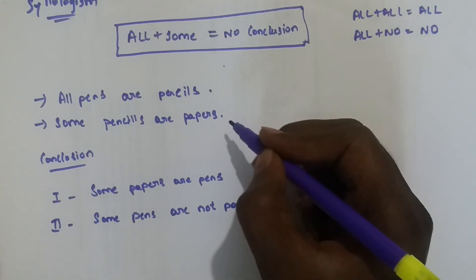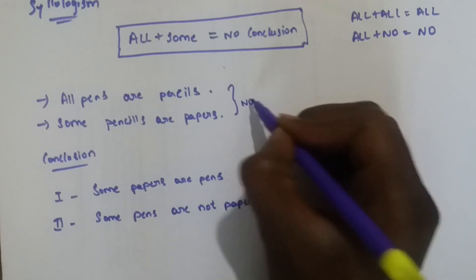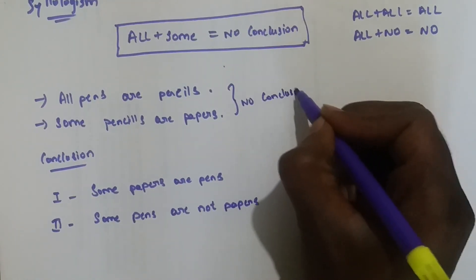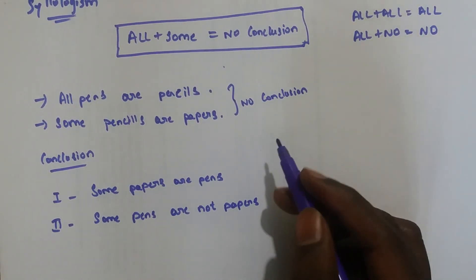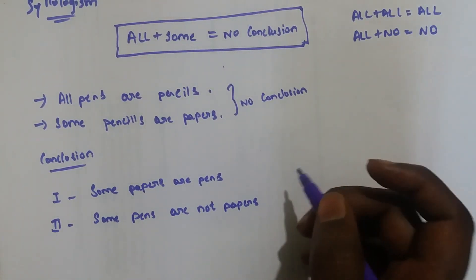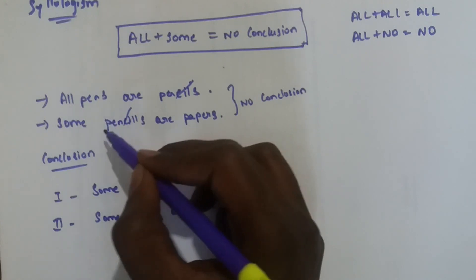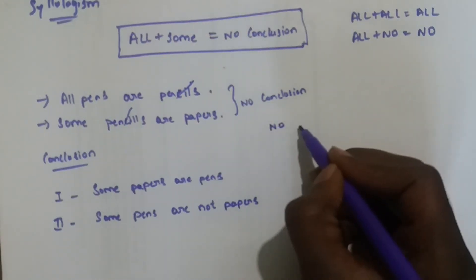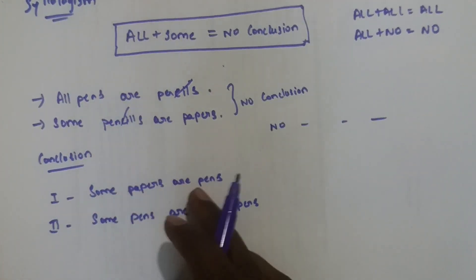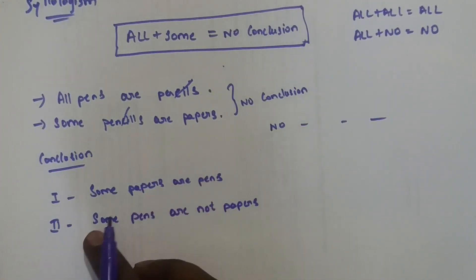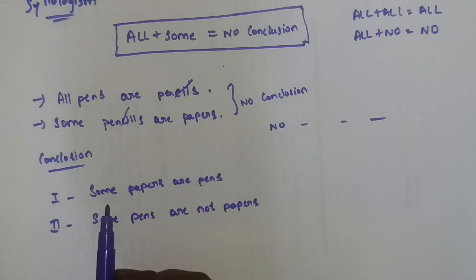In the question, the structure is All plus Some, which equals No Conclusion. Here, 'pencil' is the middle term that cancels out. All pens plus Some gives no conclusion about pens and papers — so No pens are papers. Since there is no direct relationship established, we check the conclusions against this.